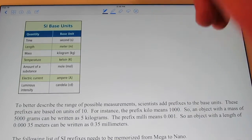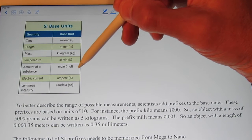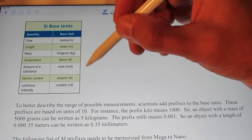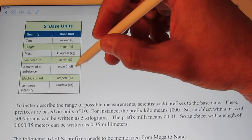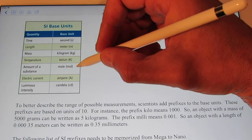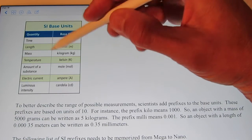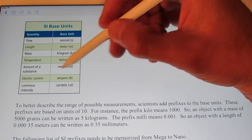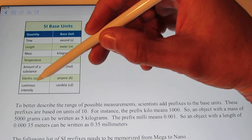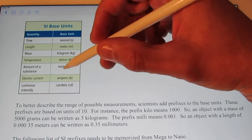If we measure the amount of a substance, we use the unit called mole. We'll talk more about that in a couple of videos from now. We use that throughout the year to determine the amount of a particular substance. Electric current is the ampere, and luminous intensity, which we don't use at all, is the candela.